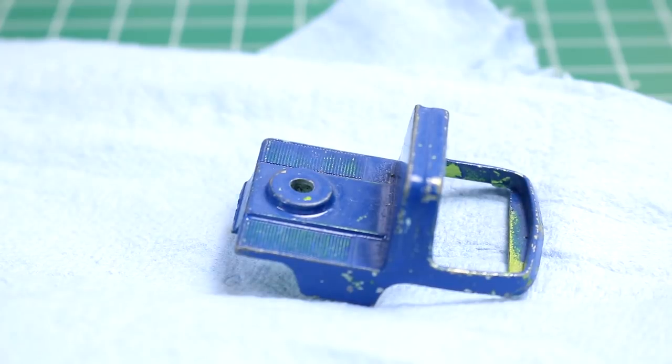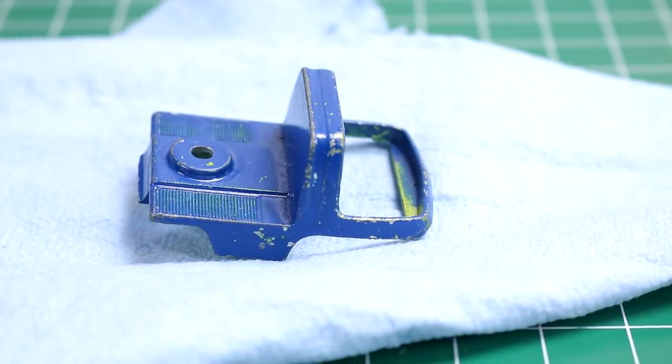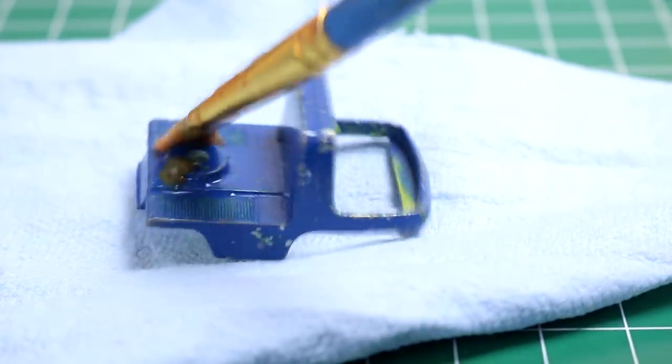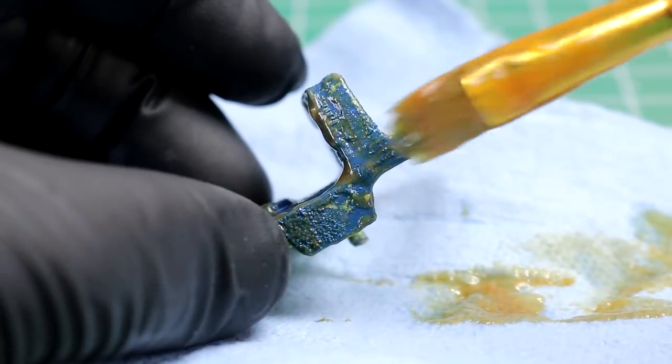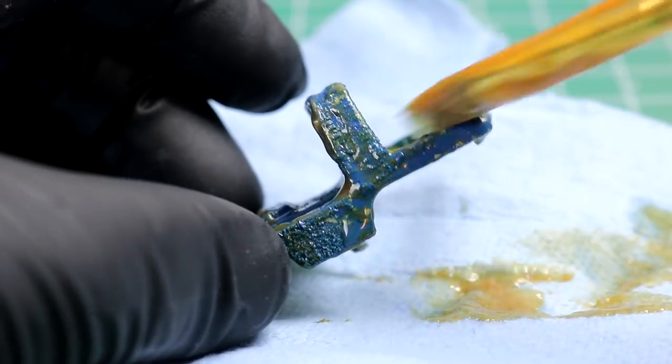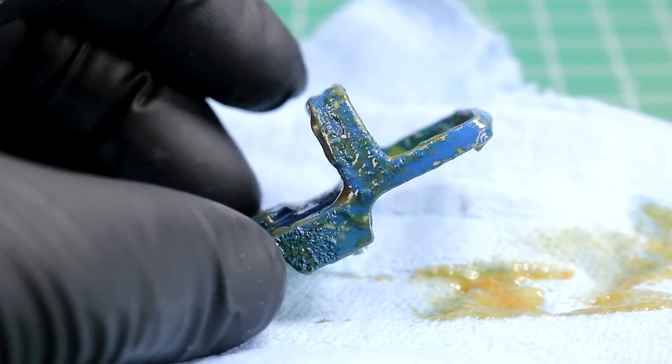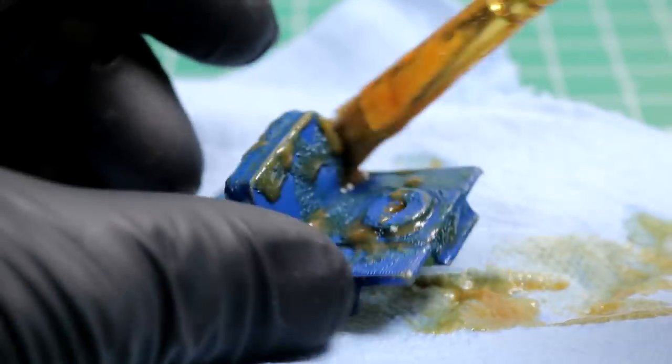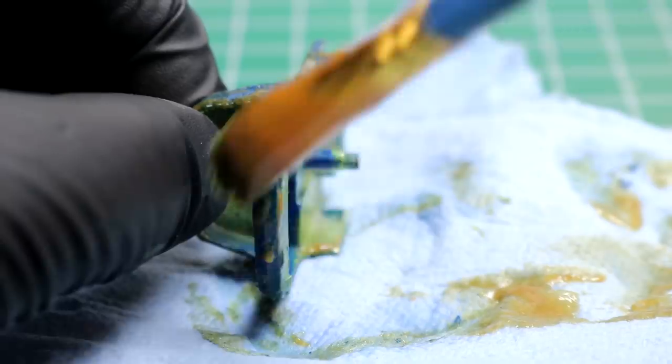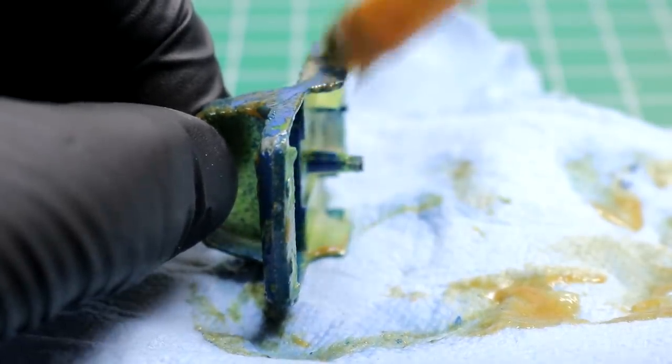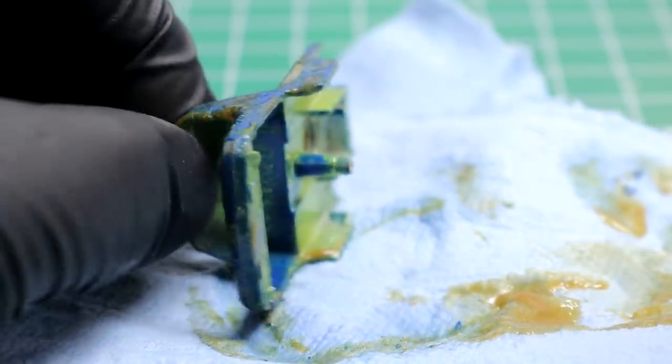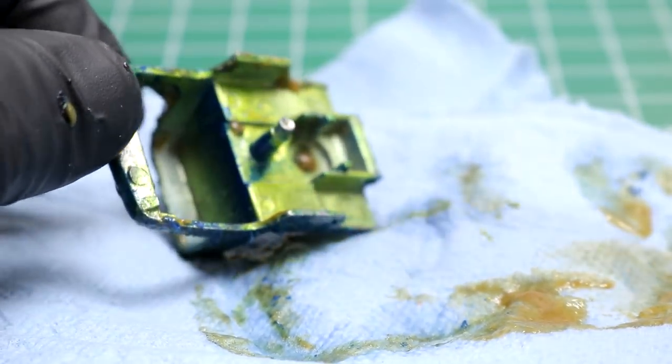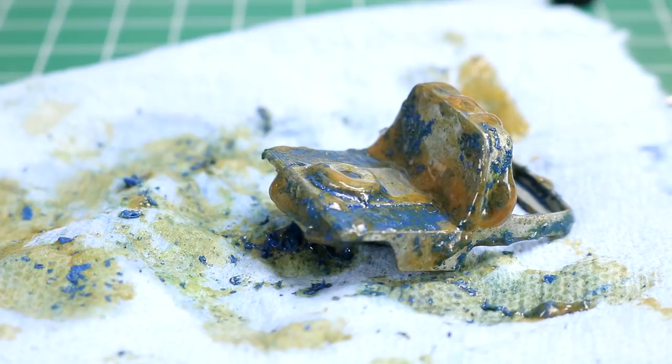So I'm going to go ahead and use our aircraft paint remover and just dab it on the body. Get as much of this paint off as possible. And yeah, it's being a little bit stubborn this time, and it happens. Start working in five minutes. Water cleanup. That's looking pretty good.